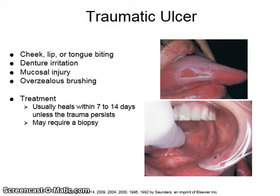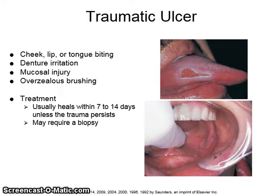A traumatic ulcer may be caused by cheek, lip, or tongue biting, denture irritation, mucosal injury, or overzealous brushing. It usually heals within 7 to 14 days unless the trauma persists. In some cases, it may also require a biopsy.